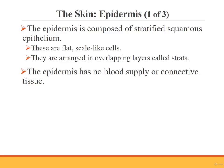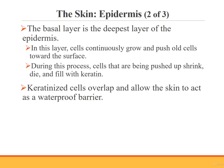Here we have a photomicrograph depicting the three layers of the skin. The epidermis is composed of stratified squamous epithelium — flat, scale-like cells arranged in overlapping layers known as strata. The epidermis does not have a blood supply or any connective tissue, making it dependent on the deepest layers for nourishment. Within the basal layer, new cells are continually growing and multiplying, pushing old cells toward the surface. During this process, cells being pushed upward shrink, die, and fill with a hard protein called keratin. Keratinized cells overlap one another, allowing the skin to act as a waterproof barrier.